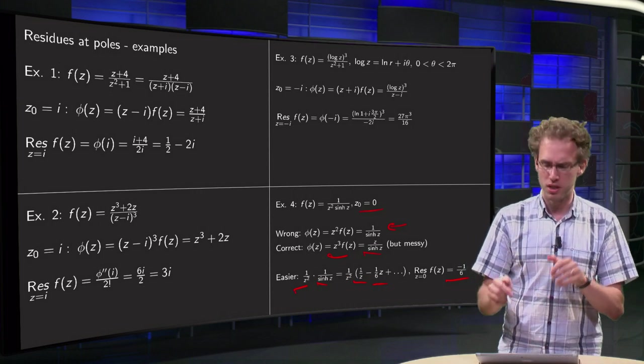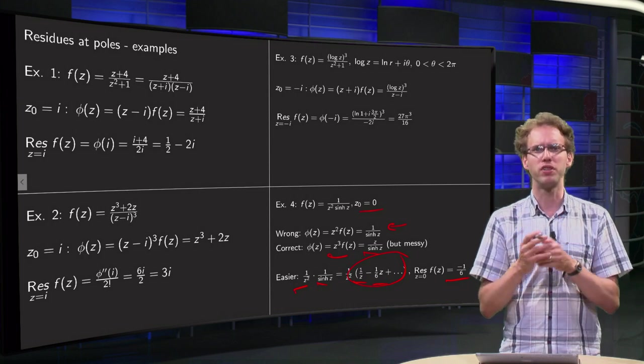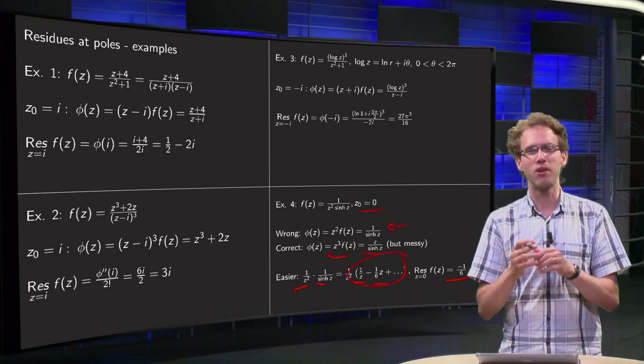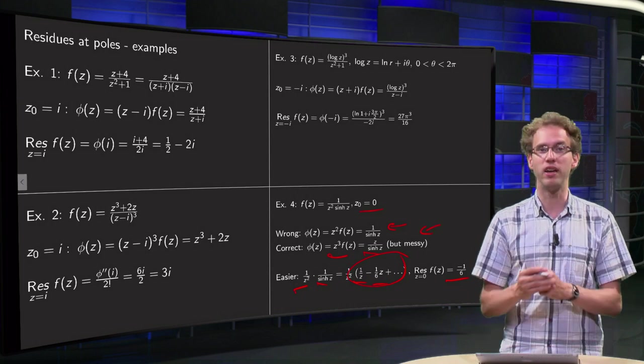Still finding this Laurent series of the 1 over sine hyperbolic of z is still kind of difficult, but it's easier than just plugging in the formula.